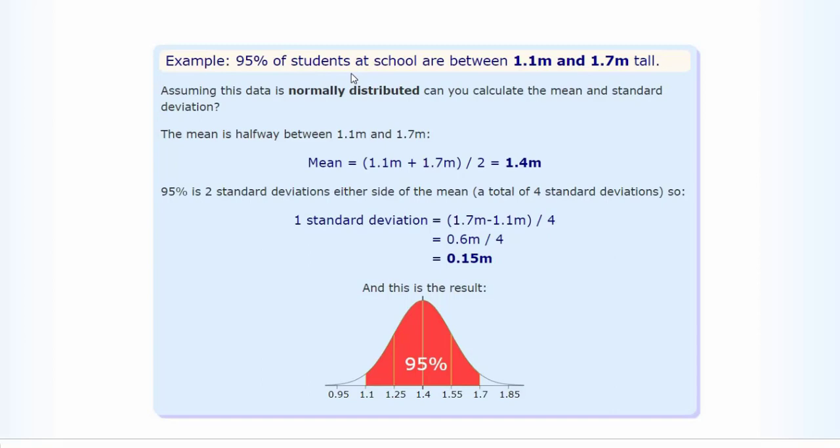Let's take an example. Let's say 95% of the students at school are between 1.1 meters and 1.7 meters tall. Now, the mean is 1.4 meters and one standard deviation is 0.15 meters. From 1.4 meters, one standard deviation toward the left is 1.25, and one standard deviation toward the right is 1.55. So 68% of the values are covered here, meaning 68% of the students fall between 1.25 meters and 1.55 meters in height.